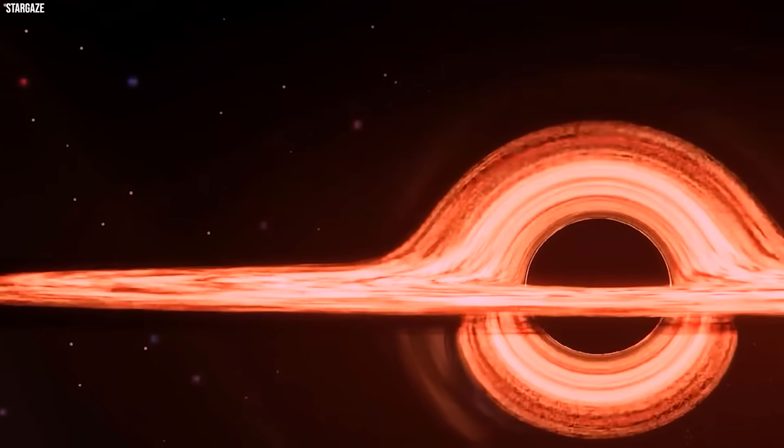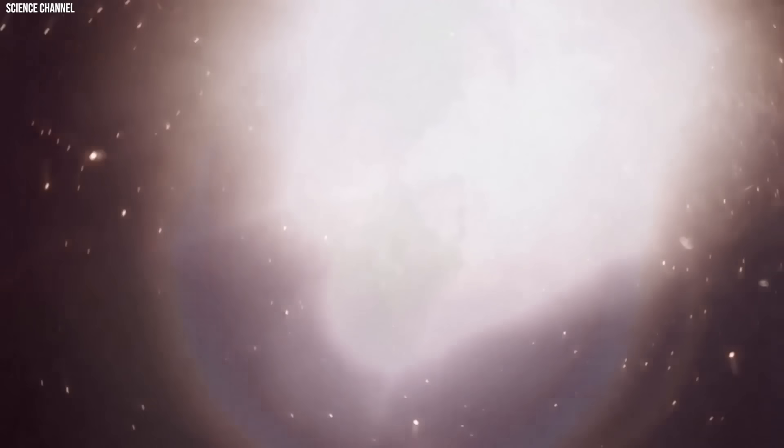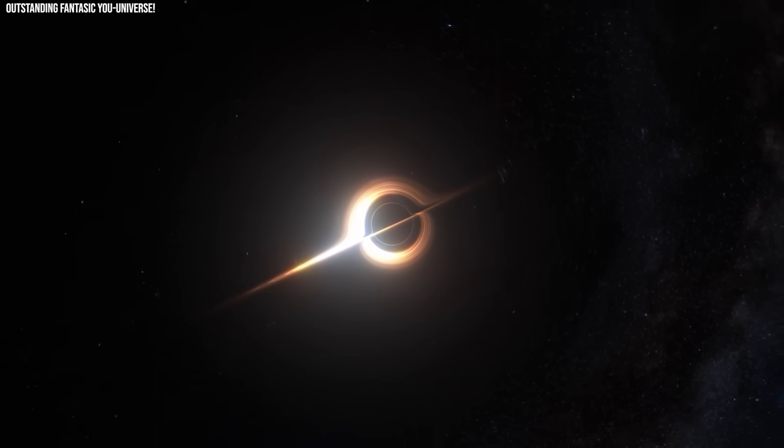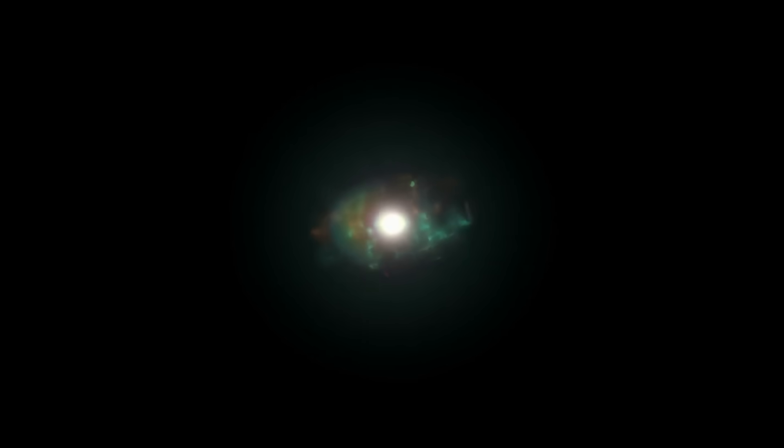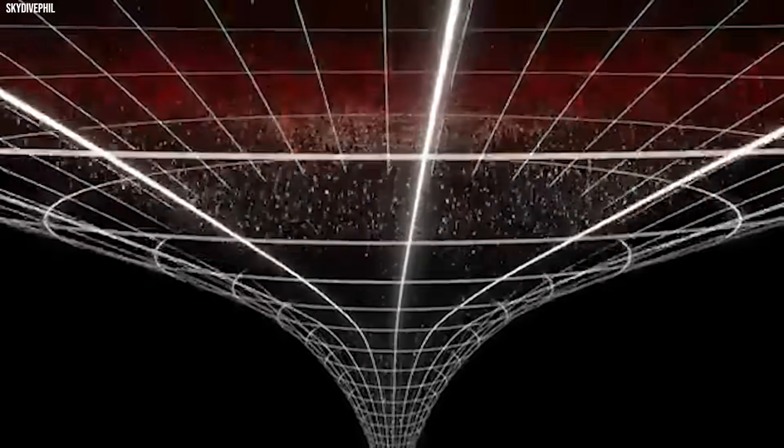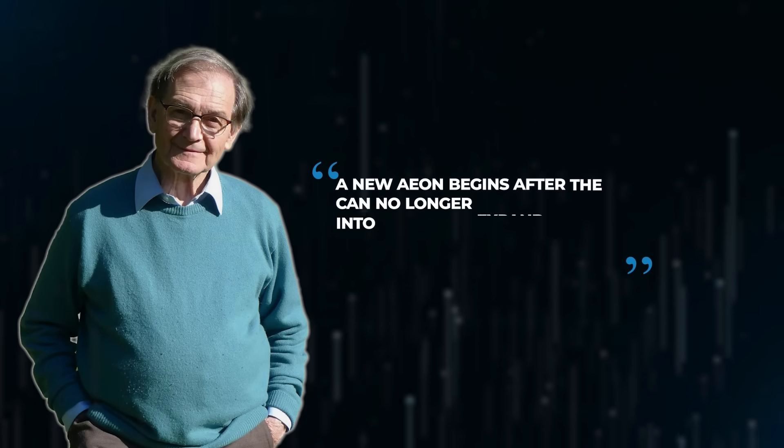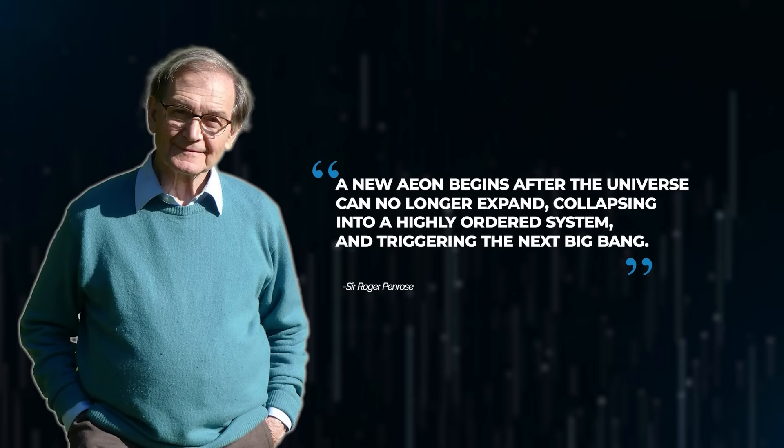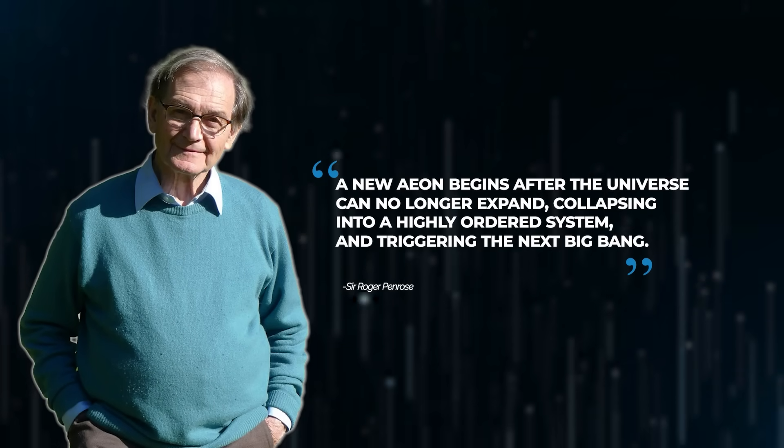Black holes leak radiation and eradicate matter. They contribute to reducing entropy. As the universe approaches its expansion's conclusion, remaining black holes will evaporate or merge, restoring order. This leads to a state resembling the Big Bang, smoothing space-time geometry from its current jagged form. According to Penrose's model, a new eon begins after the universe can no longer expand, collapsing into a highly ordered system and triggering the next Big Bang.